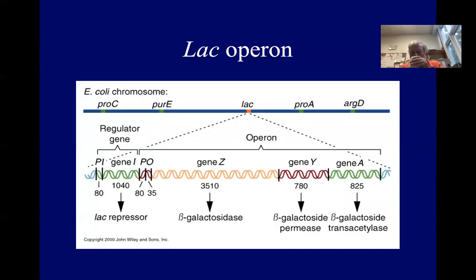So this shows at the top here, the blue line is the E. coli chromosome, linearized or straightened out. And then you can see that LAC in the middle is the LAC operon and then it's blown up for us underneath.